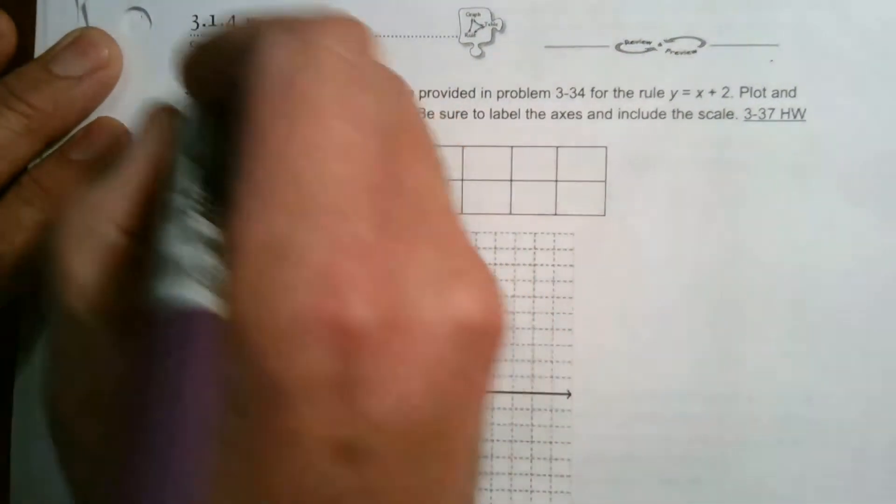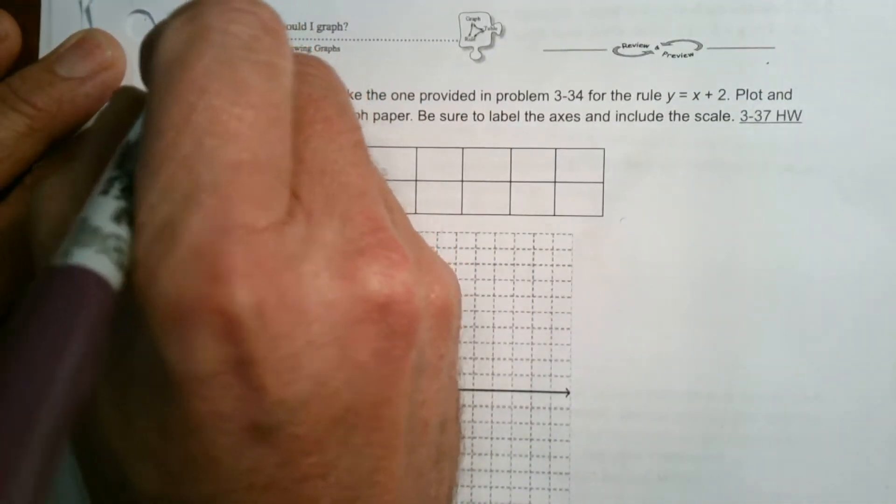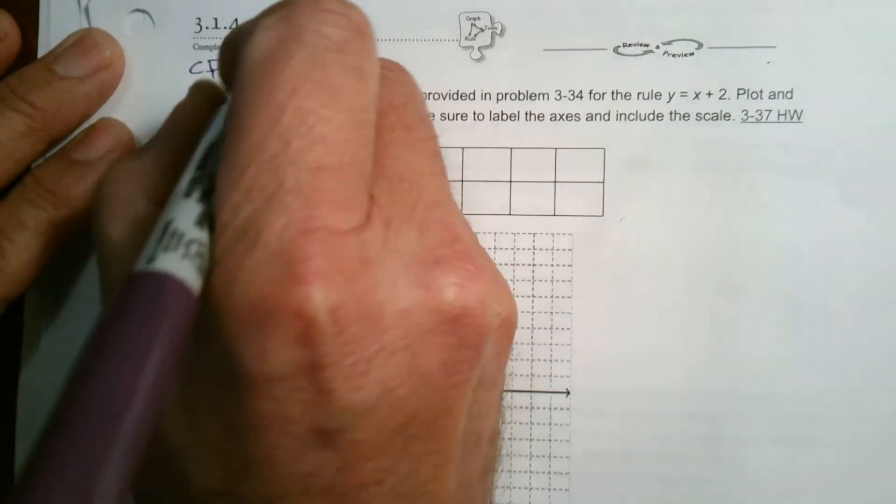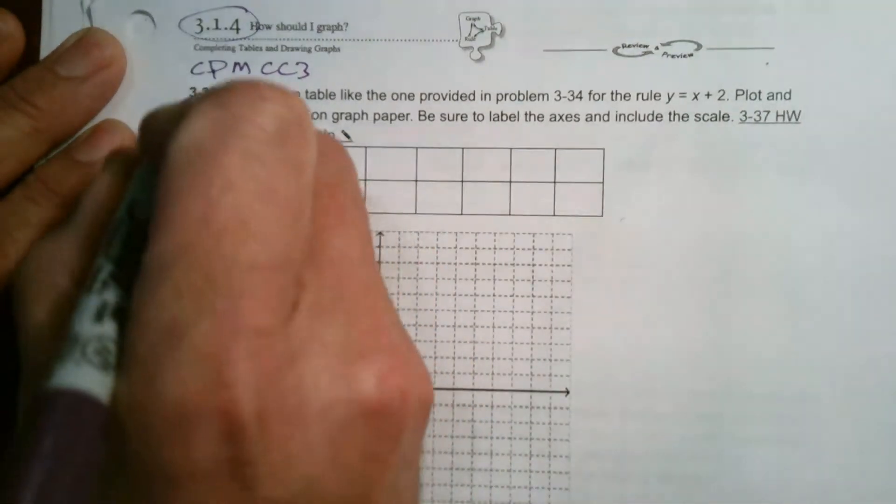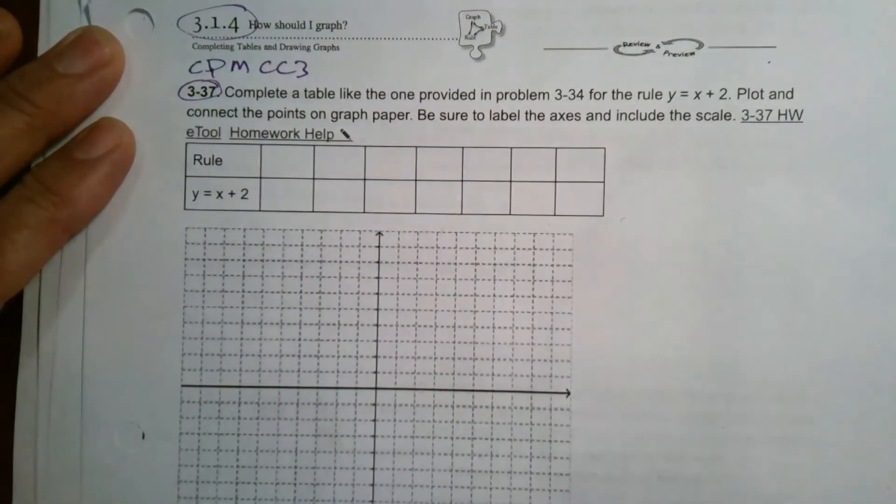So this is actually coming from CPM, this is course 3, CC3. You see our section 3.1.4 and number 3-37.